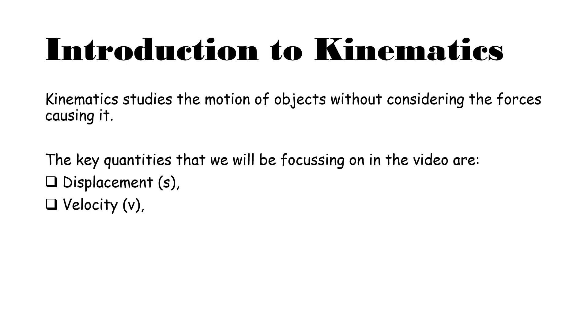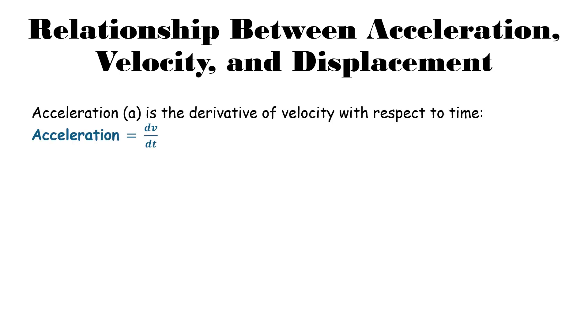We have velocity, represented by V — again a vector quantity — and acceleration, represented by A. Acceleration is the derivative of velocity with respect to time, meaning it's the rate of change of velocity. When we write dv/dt, one way to think about that is as ΔV over ΔT — the change in velocity per change in time. If we can make sense of that in a bigger context, it will help with all of our calculus.